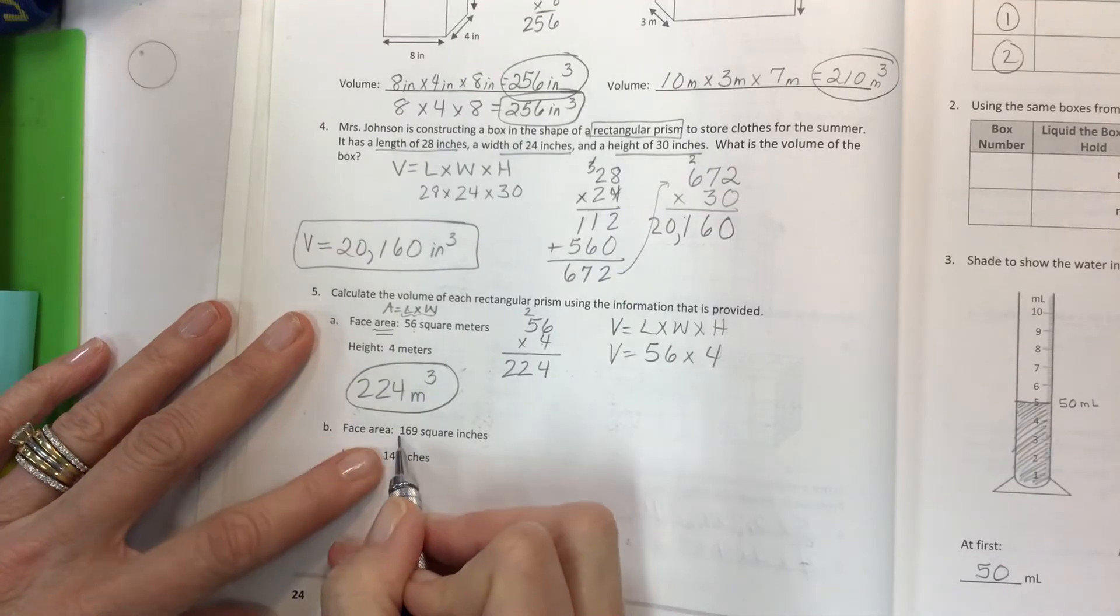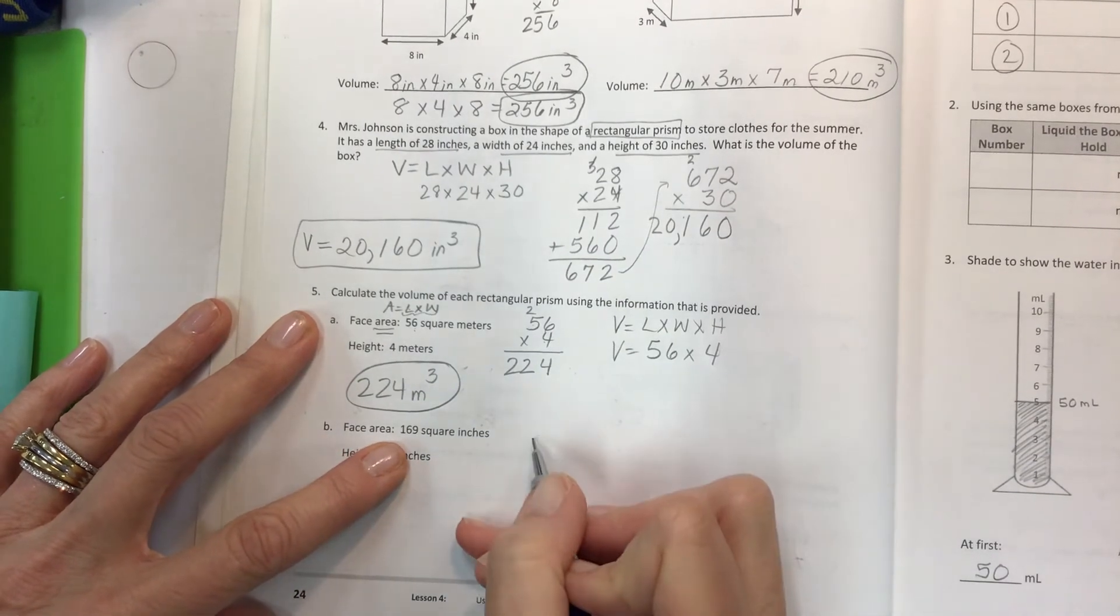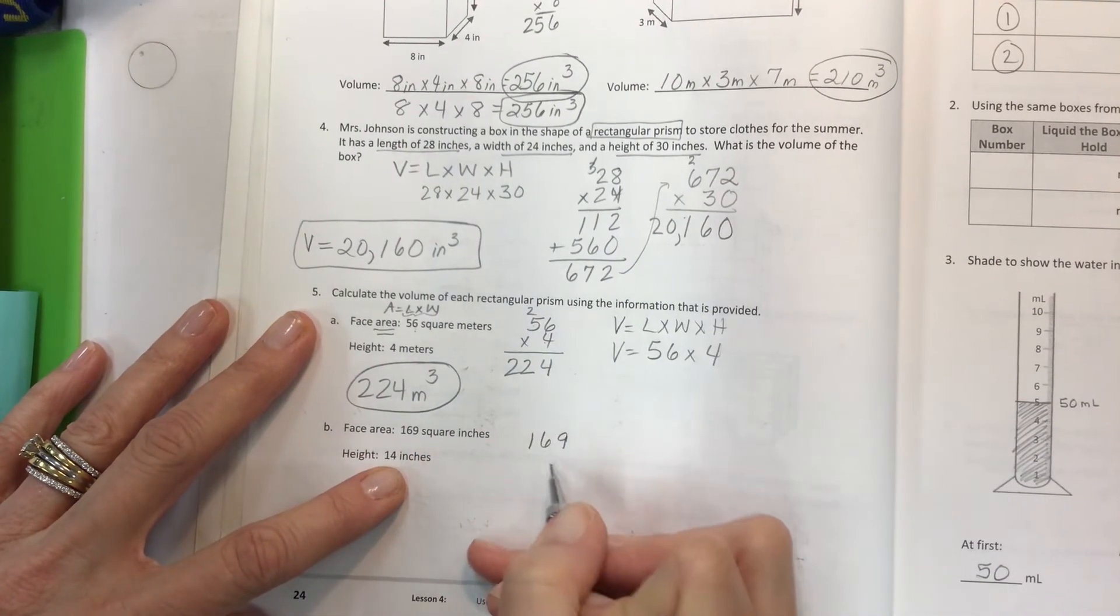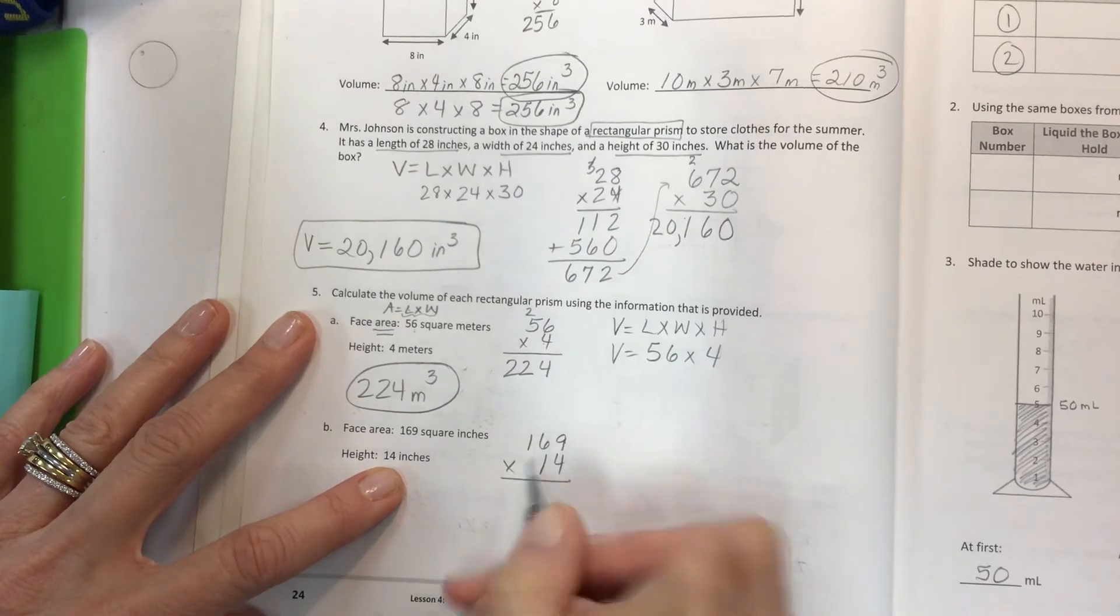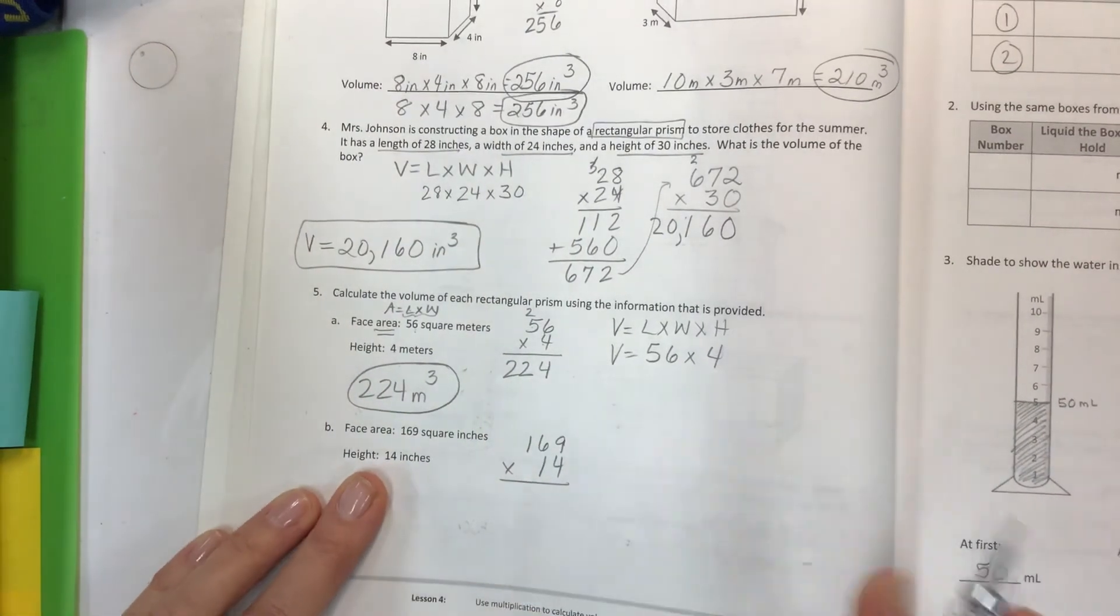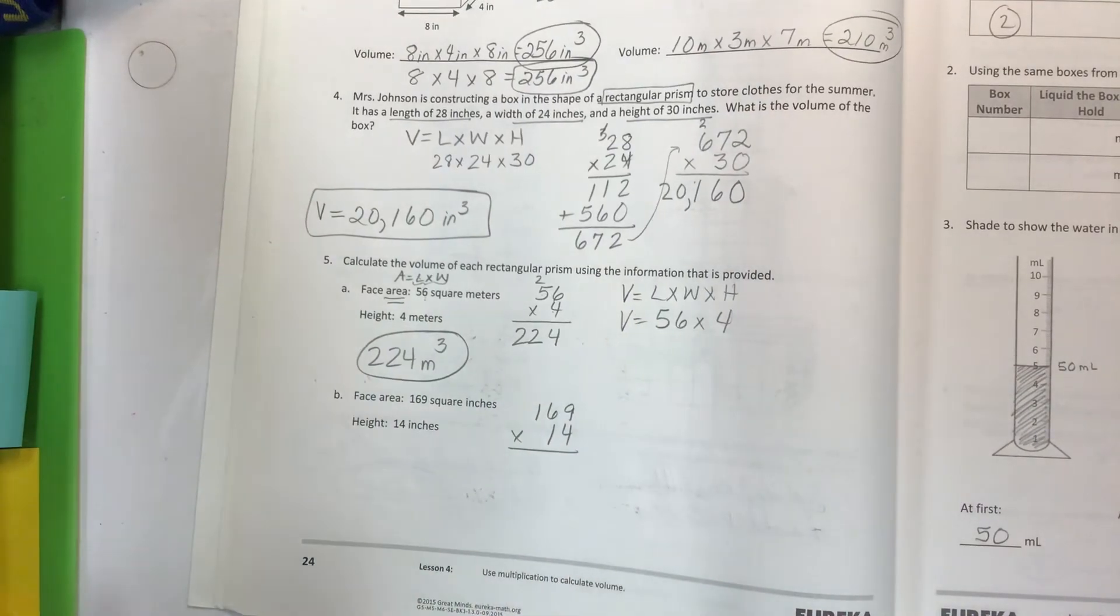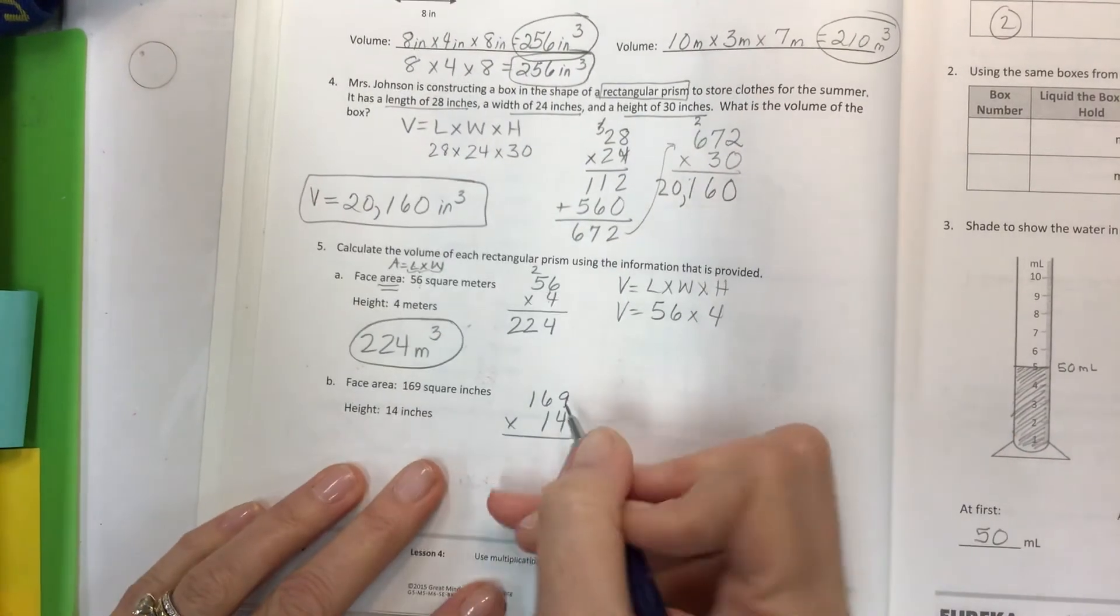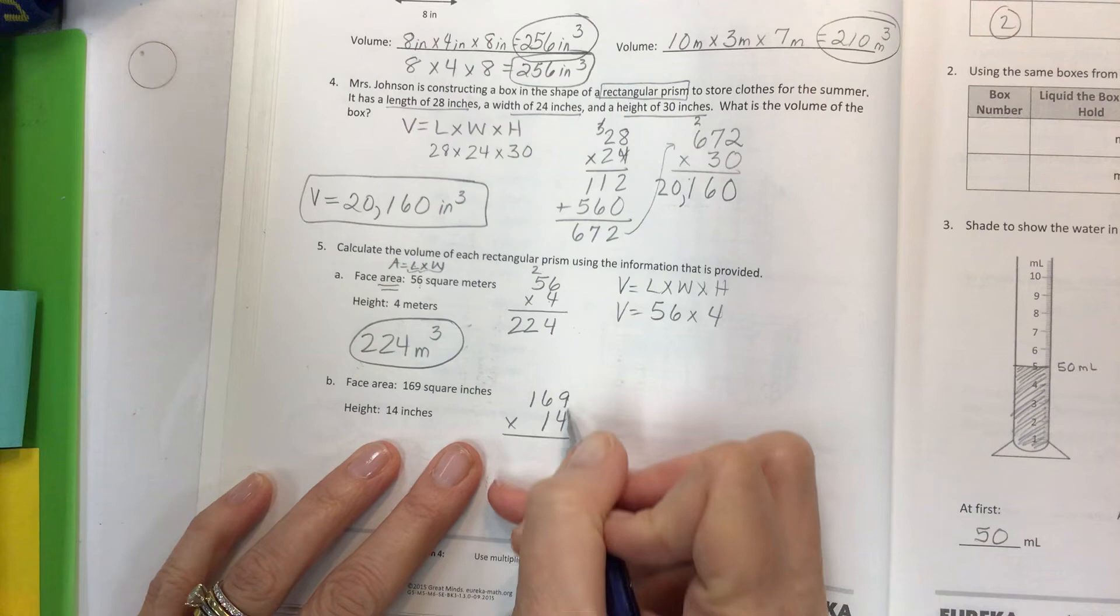Face area. Again, they gave you the length times the width. So it's 169 times 14, double digits this time. That's okay. You're ready for it. Oh, click subscribe. Come back again. I do love to help you guys with these videos.